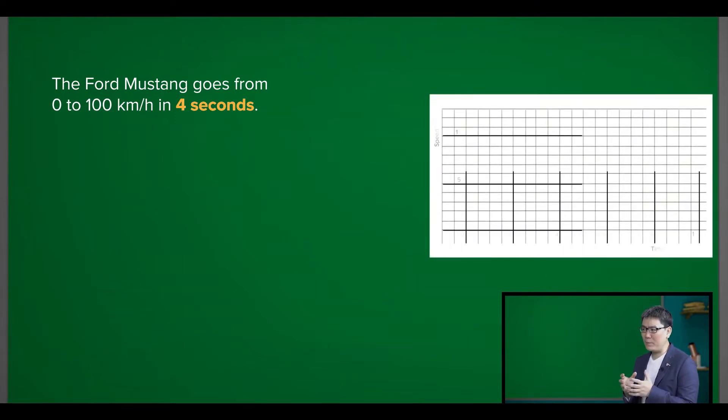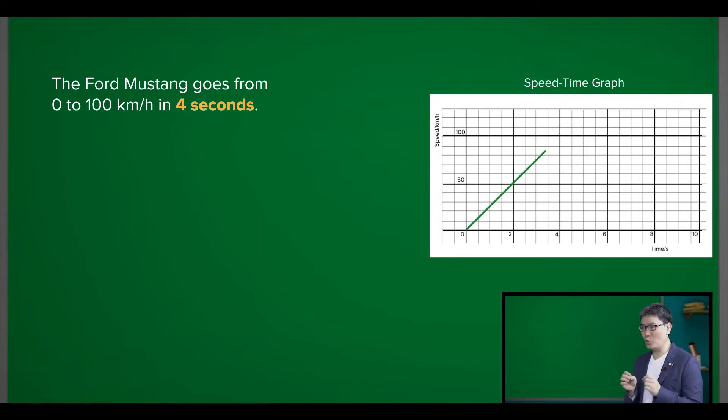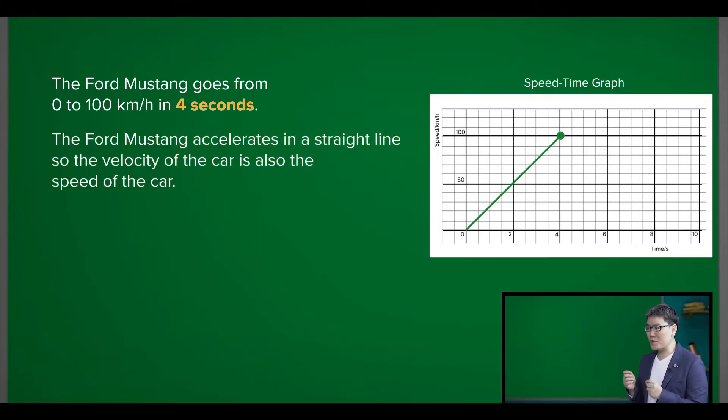In other words, I can represent this in the graph as noted by the green line. We can also assume that the Mustang accelerates in a straight line, so the velocity of the car is also the speed of the car.